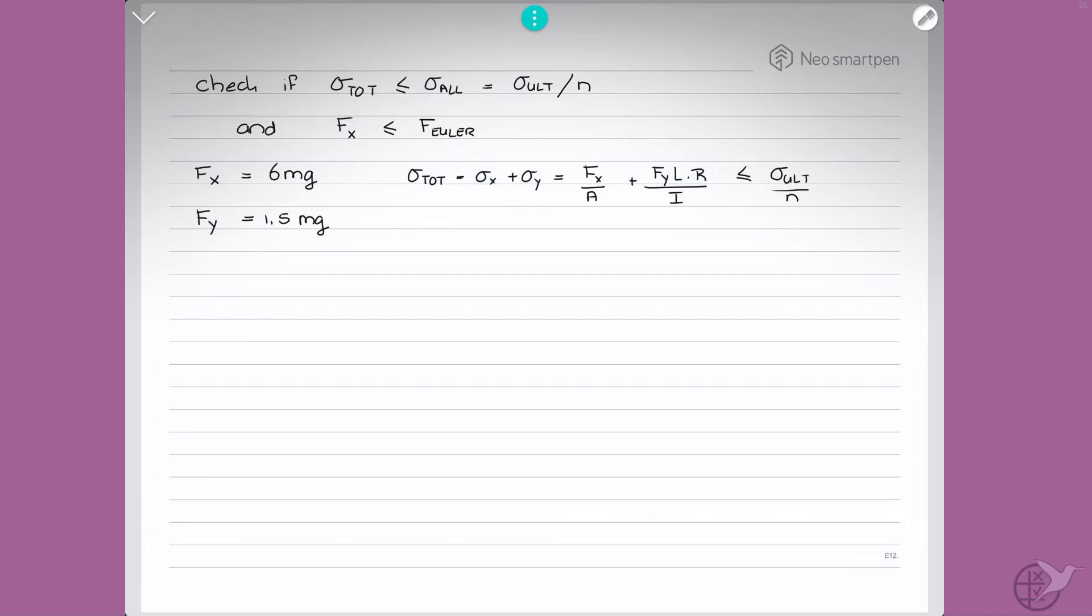Now, if you substitute all the numbers that we found earlier, what you get is that sigma x is equal to 3.12 MPa. Sigma y is then equal to 15.96 MPa. And the ultimate stress for aluminum is given as 483 MPa, and our safety factor N is equal to 2. Substituting all these numbers gives that 19.08 MPa must be smaller than sigma ultimate over the safety factor, which is equal to 241.5 MPa. So we've definitely met this requirement. That one's okay.